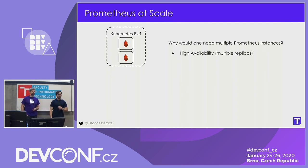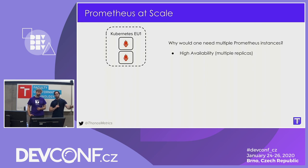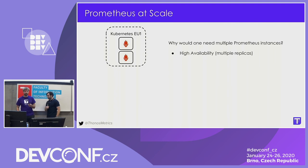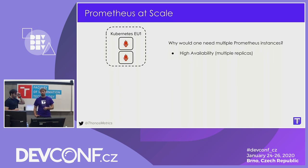Maybe one question: if you have two nodes, which one is alerting? We will cover that. The thing to remember here is that in this highly available scenario, both Prometheus instances are scraping all of the different applications, and they're also evaluating alerting rules.